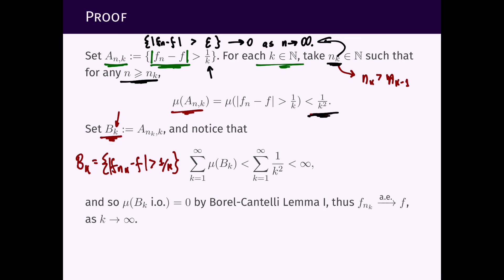And now we notice the following: the measure of these sets B_k, because each one of them is bounded from above by 1 over k squared, this measure is summable. And then we can use Borel-Cantelli lemma 1 to say that B_k, the measure of the union over k, the measure of the lim sup in k of B_k is zero. That is exactly Borel-Cantelli lemma 1.